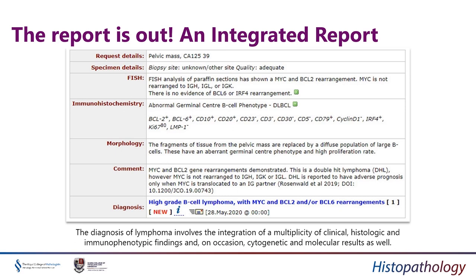Because this is a complex case, we also used FISH — fluorescence in situ hybridization. As in every report, you will always be requested to include the specimen details, and sometimes very useful comments. This was a case of double-hit lymphoma, which is part of the high-grade B-cell lymphomas described in the revised WHO classification in 2017.